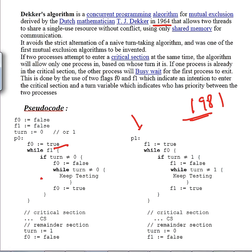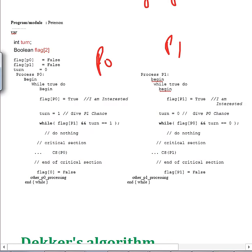To handle this starvation issue, we have to implement some aging factors. If a process is waiting for a long time and the turn doesn't become zero, it should be able to come out of the while loop. This is a necessary addition to make the algorithm more robust.